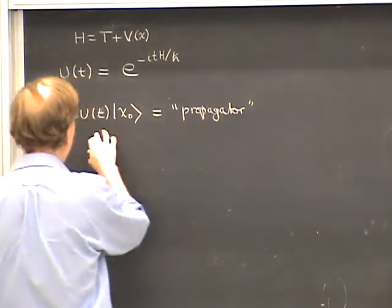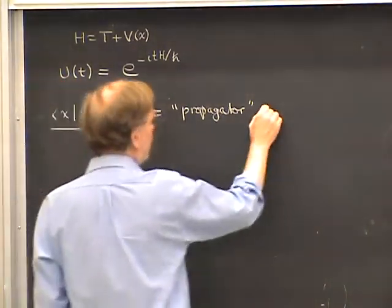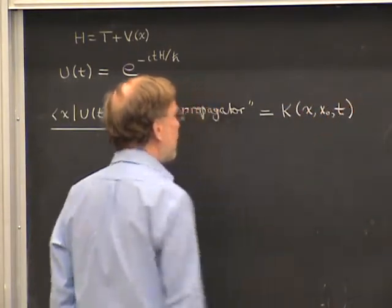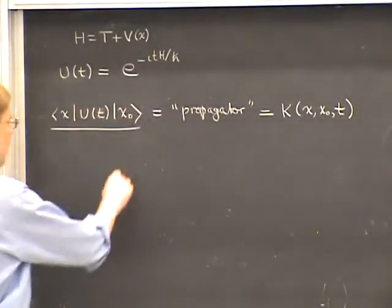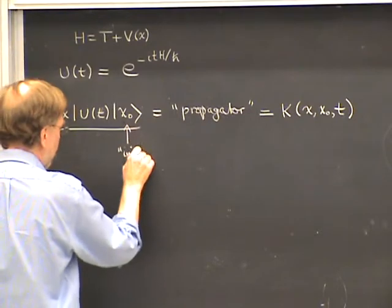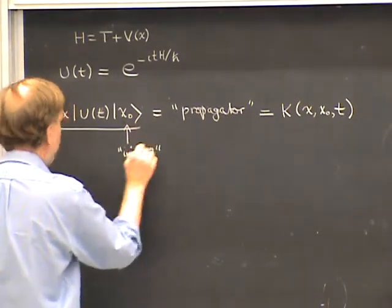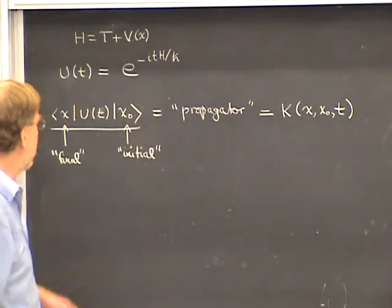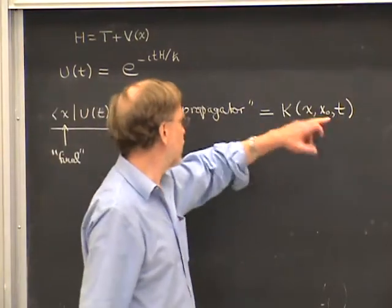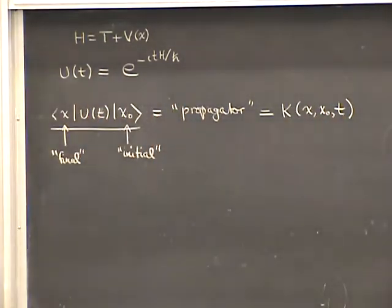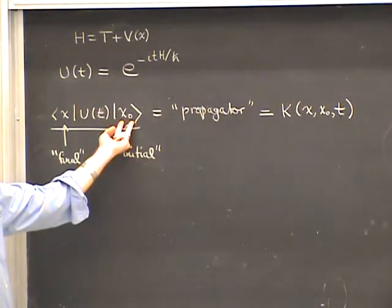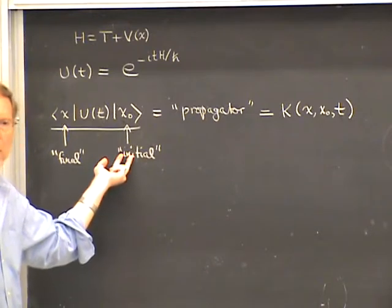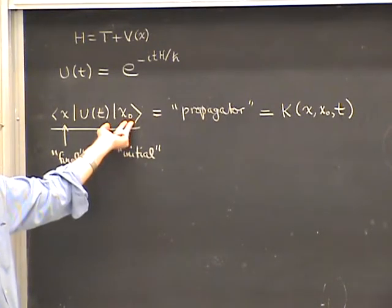This means the propagator — let's call it capital K, a function of two positions X and X₀ and elapsed time T — has X₀ as an initial position and X as a final position. You can also think of an initial and final time, where T equals 0 is the initial time and T is the final time. The ket |X₀⟩ is a singular quantum state in which the particle is concentrated in an infinitesimal region around the point X₀ — it's not normalizable, but it's an idealization of realistic states.